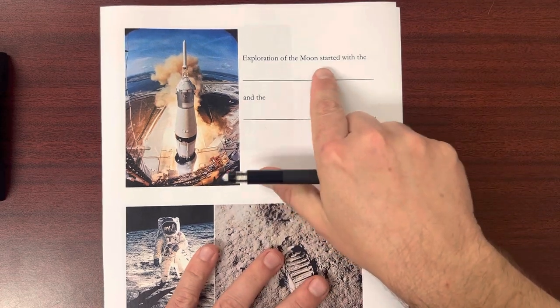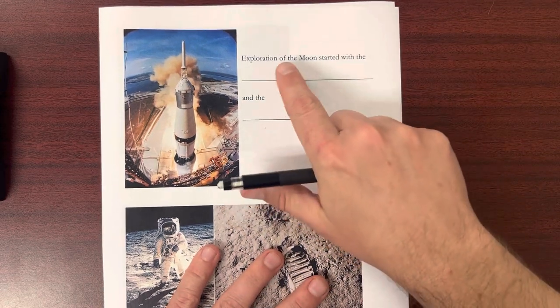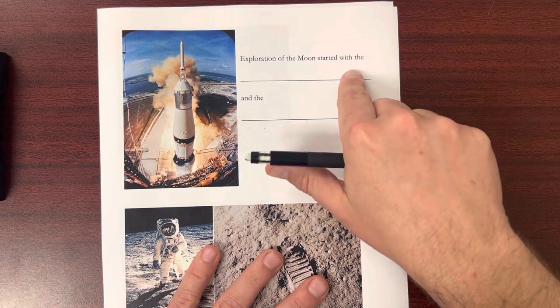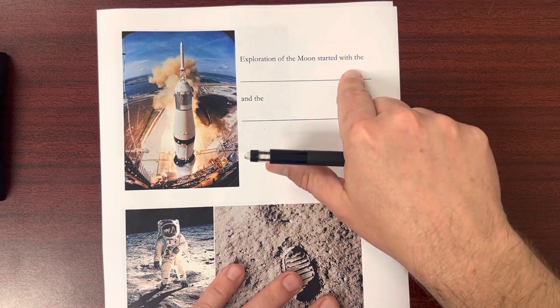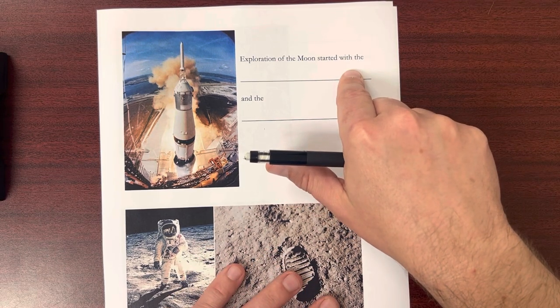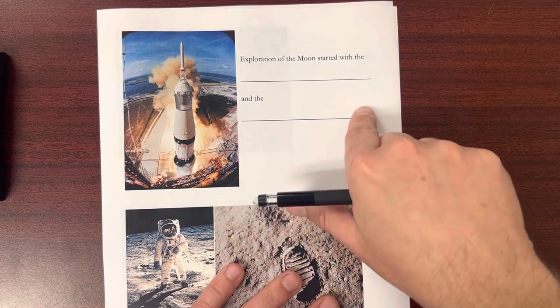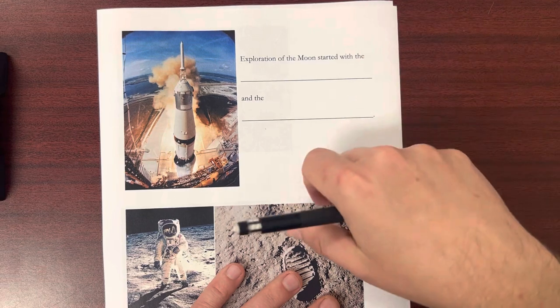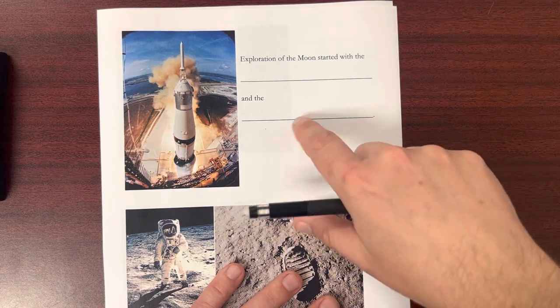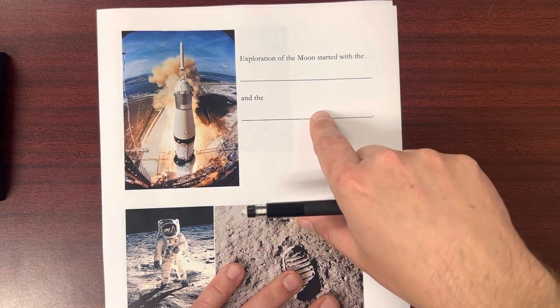So exploration of the moon started with the Apollo program. You've heard of the Apollo program. This is Apollo 8, Apollo 10, Apollo 11, and the Saturn V rocket. So those are the big components of our exploration of the moon.